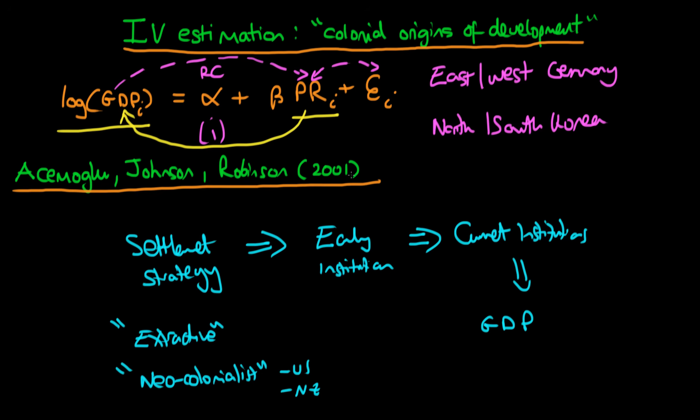But they needed some instrument for this settlement strategy, and ingeniously they used the settler mortality rates. The idea is that differences in the mortality rates, which were primarily due to things like malaria or yellow fever, actually affected the type of regime which was set up in these settlements.